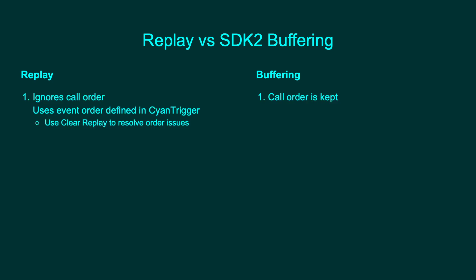The largest difference is that Replay does not keep the call order for events. In SDK2, order is kept when calling buffered events. With CyanTrigger, replayed events will always play in the order they were defined in the trigger. When comparing CyanTrigger on different objects, the replay order could change every time.